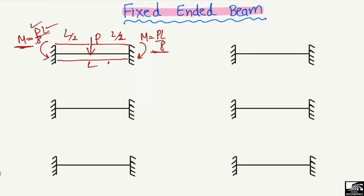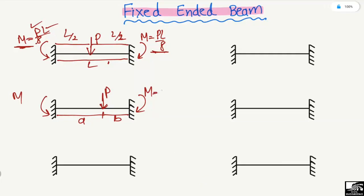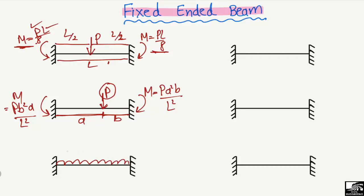The second case is when load P is acting not at the center but at a distance A from the left end and a distance B from the right end. In this case the moment values at the two ends will not be the same. The moment at the left end equals Pa²B/L², and the moment at the right end equals PB²A/L². These are the moment values at both ends when load P acts at distance A from the left and B from the right.